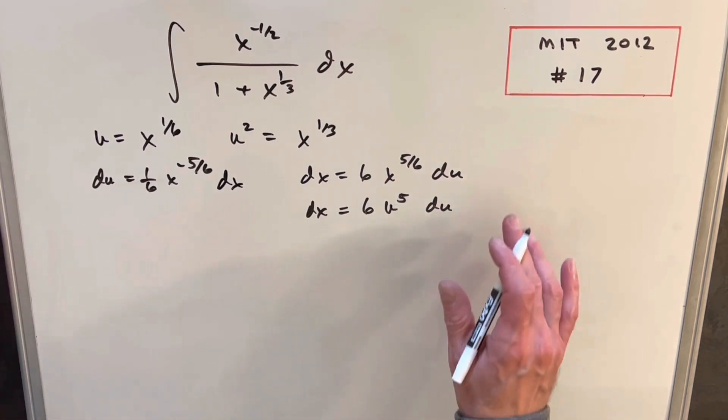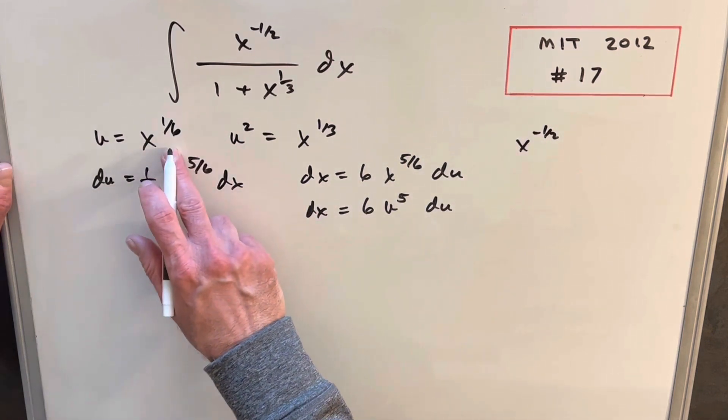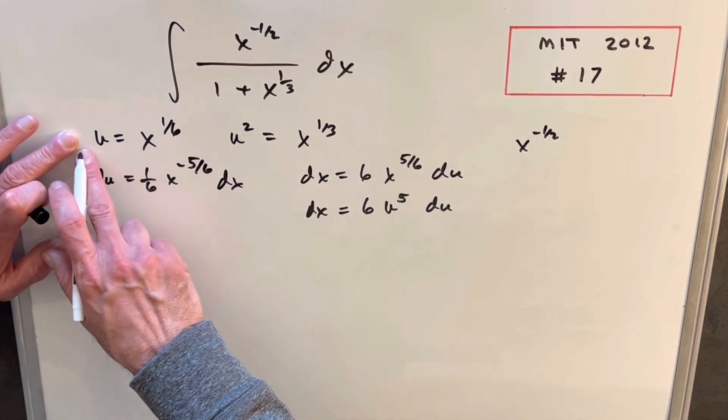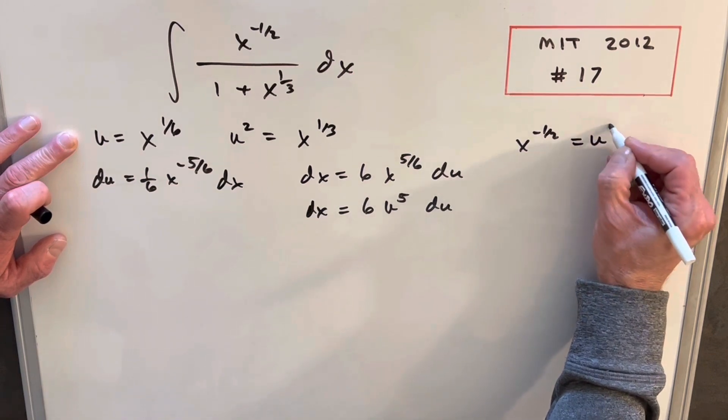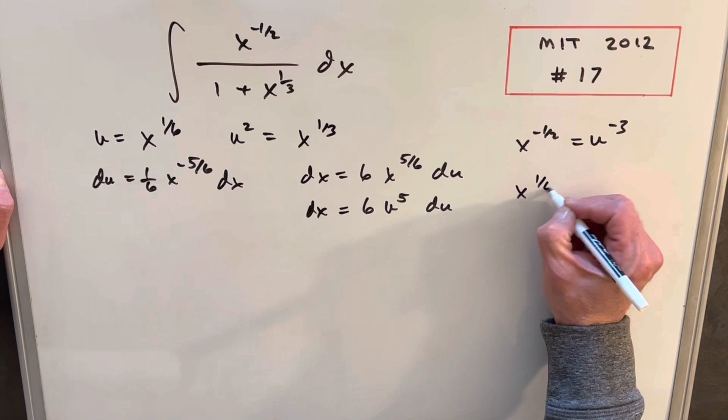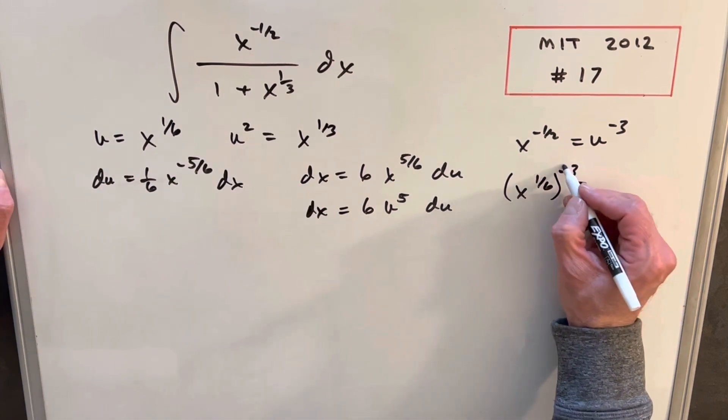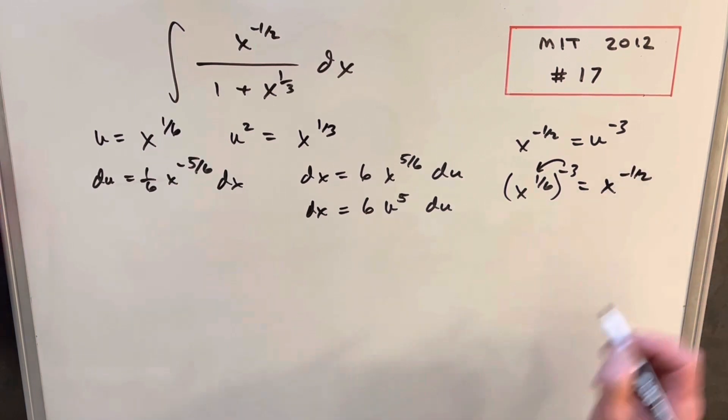Then before we make the substitution, I want a value for x to the minus 1 half. And we can do that. And you just notice, if you take u to the minus 3, u to the minus 3 is going to work, if we look at our u is x to the 1 sixth. If you take that to the minus 3 and multiply in the powers, you get x to the minus 1 half.